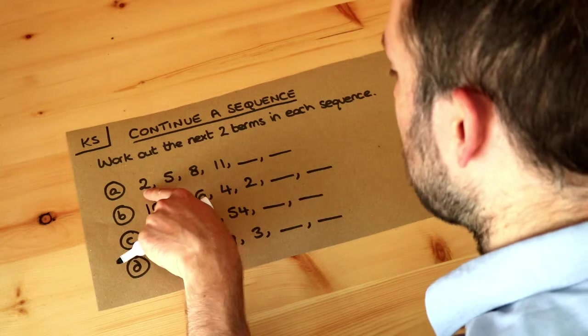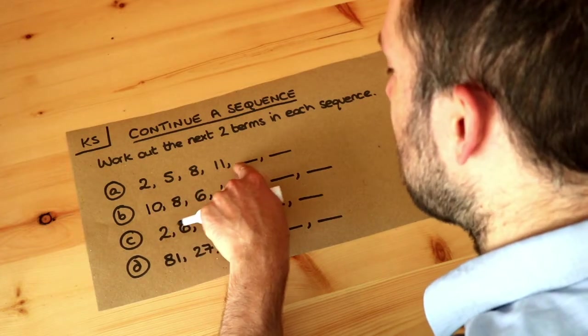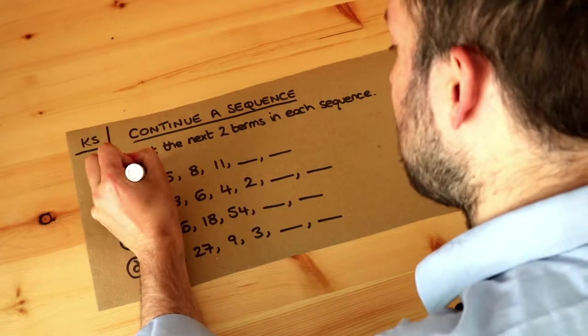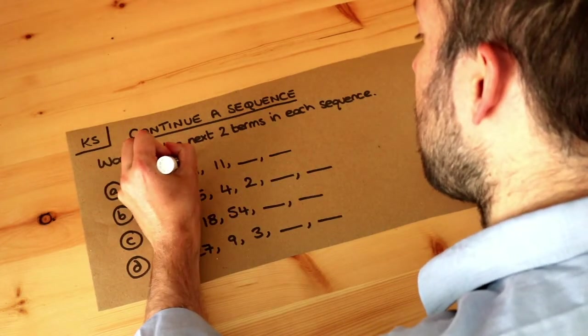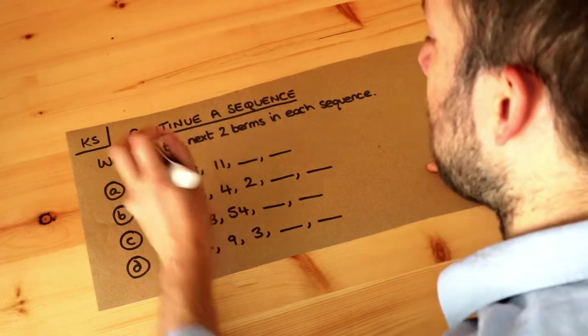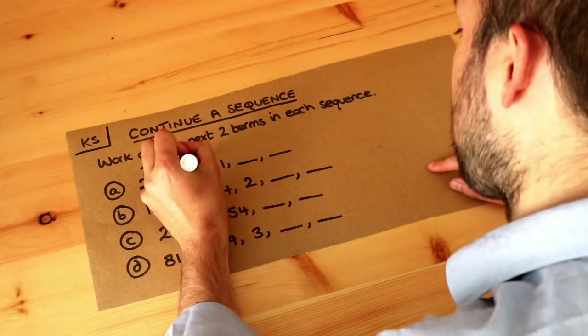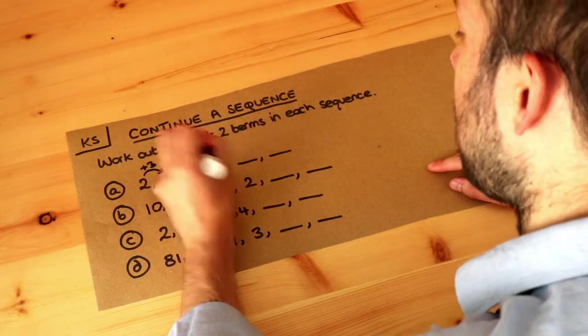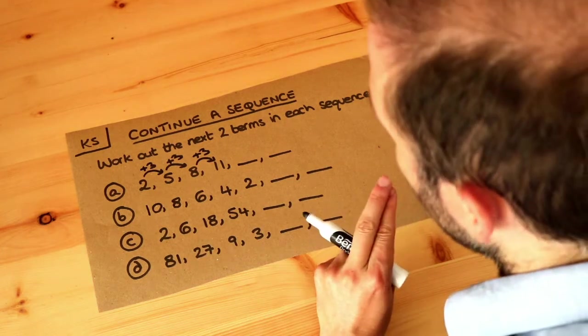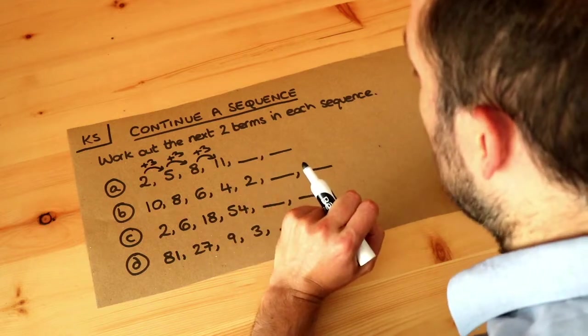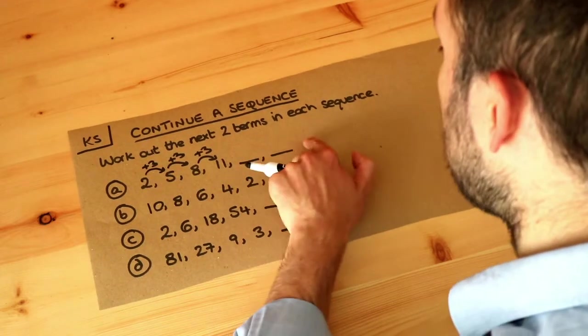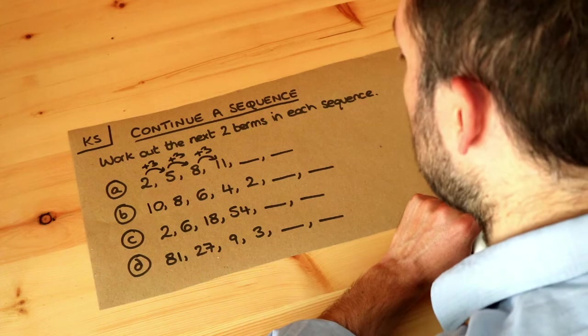Now can you see for this first sequence as we go from left to right the numbers seem to be getting bigger by 3 each time. So to get from 2 to 5 that seems to be getting 3 bigger, that seems to be getting 3 bigger to get from 5 to 8, then to get from 8 to 11 that seems to be getting 3 bigger. So we're just going to assume that this sequence continues in this particular pattern and using that particular pattern we can work out what the next few terms of the sequence would be.